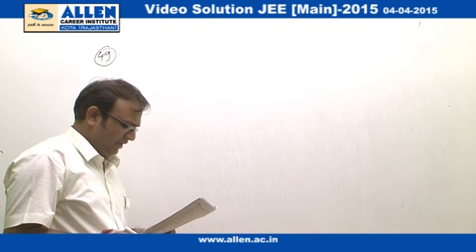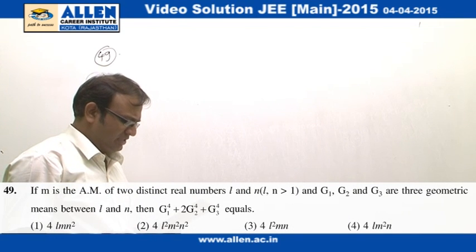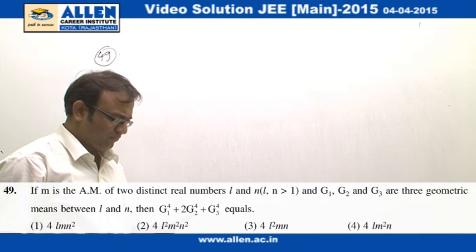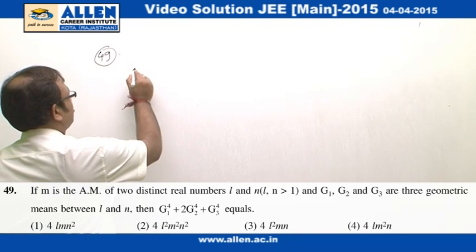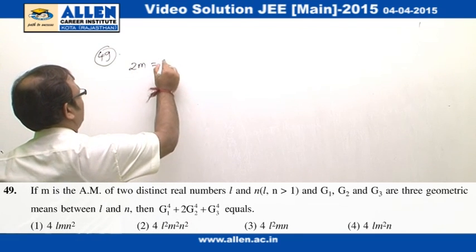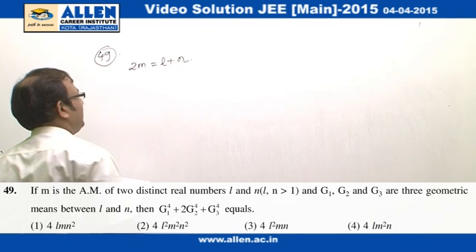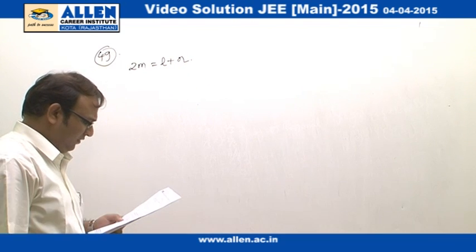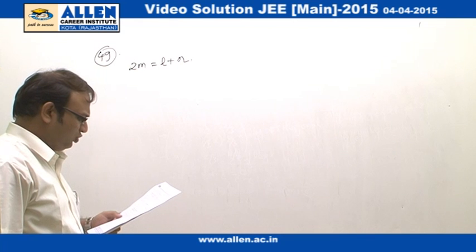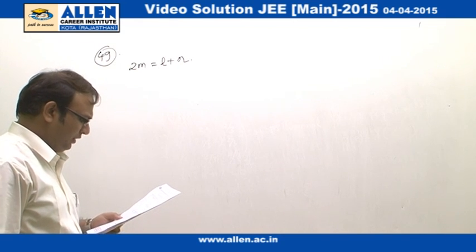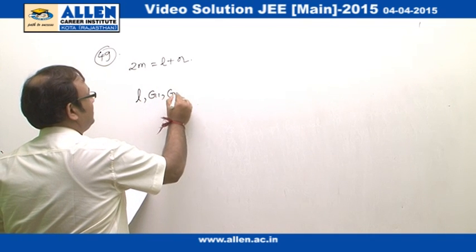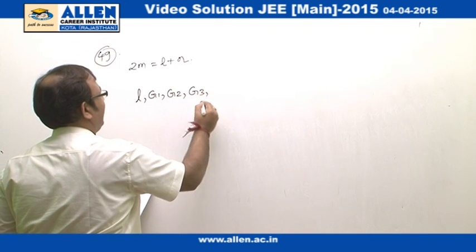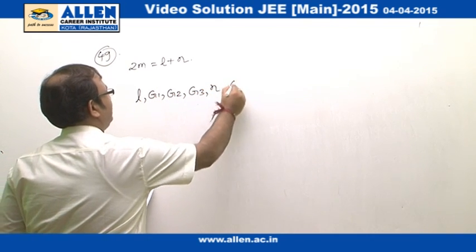Now in question number 49, we are being given with two numbers L and N which are greater than 1 and M is the arithmetic mean. So obviously, 2M is equal to L plus N is what we are being provided with. After that, we are also provided that there are three geometric means in that order G1, G2 and G3. So L, G1, G2, G3 and N, they are in GP.